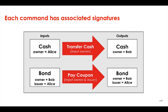Each command has an associated list of required signers. For example, a CordApp developer may have defined a CordApp such that cash transfers must be signed by the owner of the cash, and coupon payments must be signed by the bond issuer and the owner of the bond. To be valid, the transaction proposal would have to gather signatures from all the required signers of all the commands — so from the cash's owner Alice, the bond's owner Bob, and the issuer of the bond Alice. Overall, you'd have to get signatures from Alice and Bob.